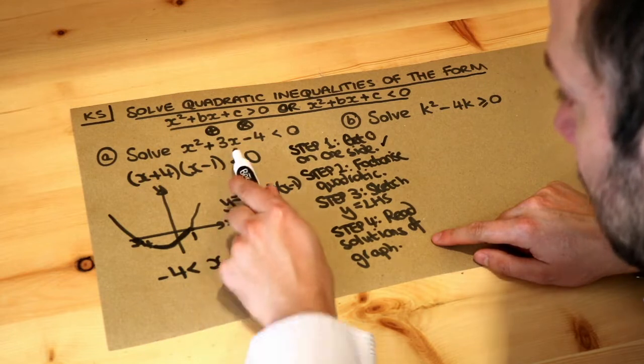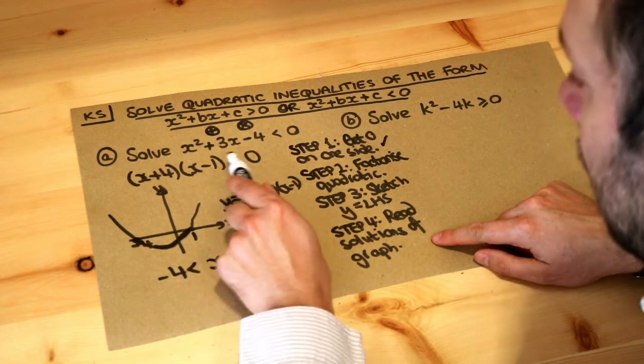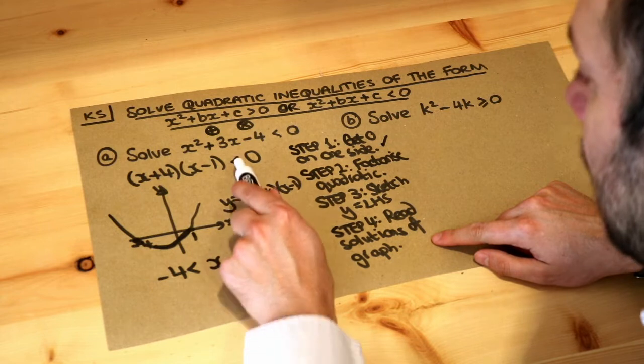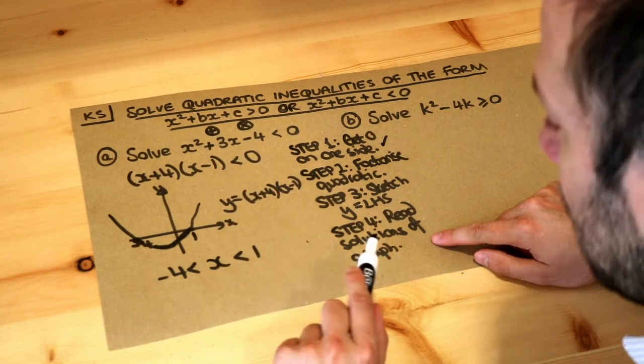And notice by the way that this should be consistent with that symbol. So if that's less than, that should be less than. If that was less or equal to, that should be less or equal to.